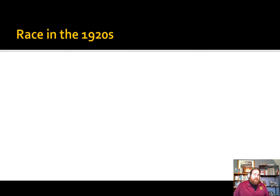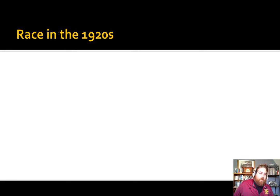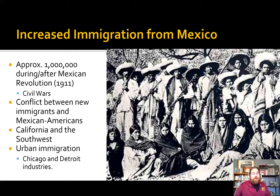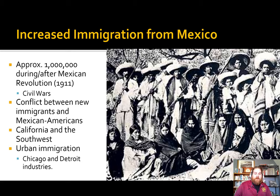A big issue we have to discuss is race in the 1920s. A big thing causing these issues is increased immigration from Mexico and the migration of African Americans into northern cities and around the south. During the Mexican Revolution in 1911 through the World War I Bracero program, over a million persons from Mexico immigrate into the United States. A lot are pushed out by civil wars like the Cristero War, moving to what they believe is safer — the United States.